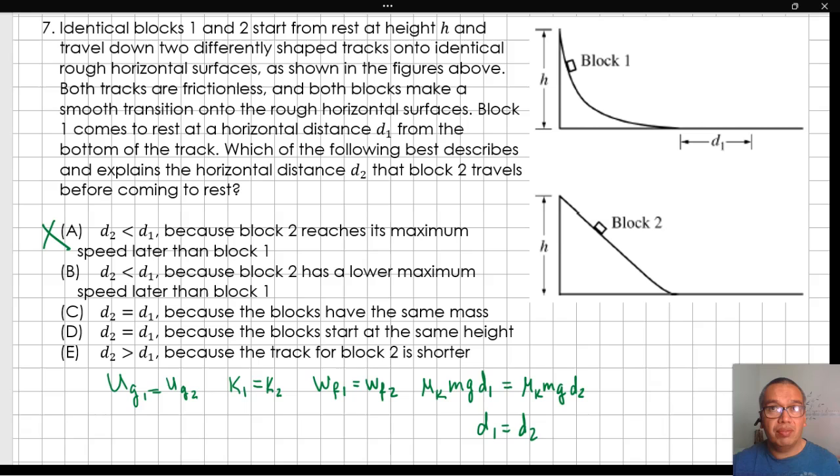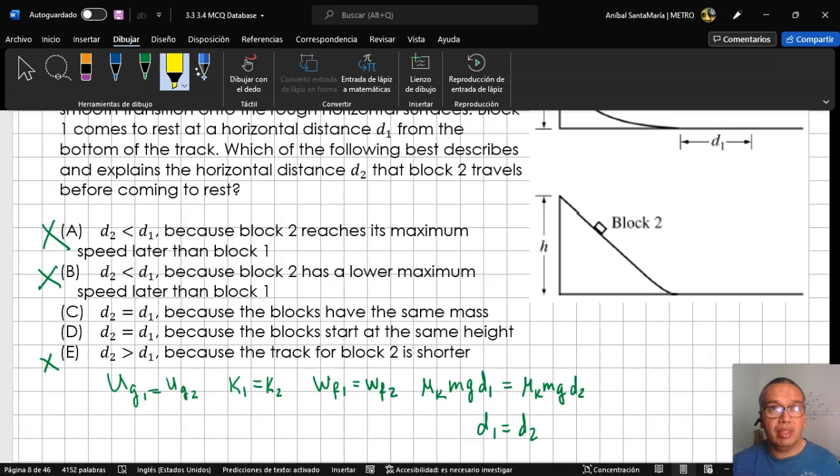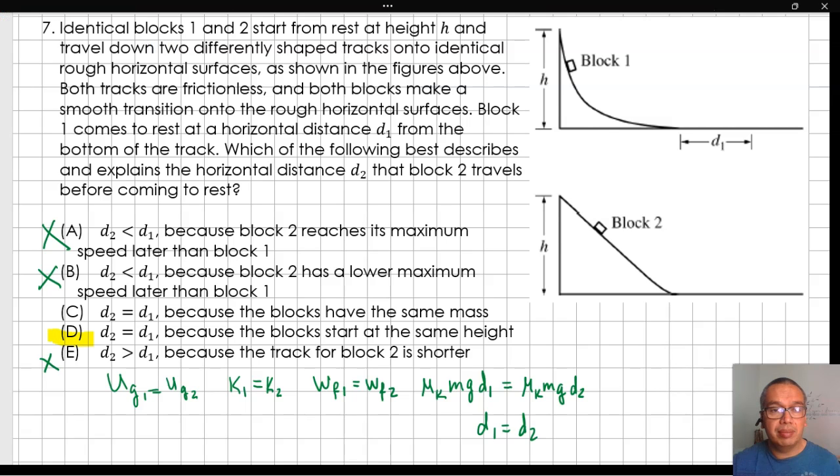the reason that we have the same distance at the end is that they both start from the same height with the same initial amount of energy. This means that the most correct option is D.